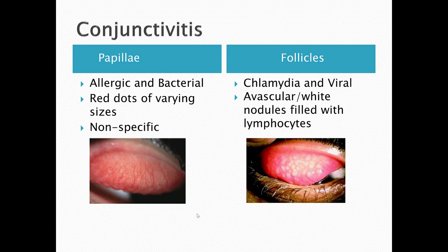Regarding palpebral appearance, there are papillae and follicles. Papillae are seen in allergic and bacterial conjunctivitis — little red dots in varying sizes, a non-specific appearance. Follicles are seen in chlamydial and viral conjunctivitis — avascular white nodules filled with lymphocytes. If it has the white appearance, that's a follicle; if it has that bumpy appearance, that's a papilla.